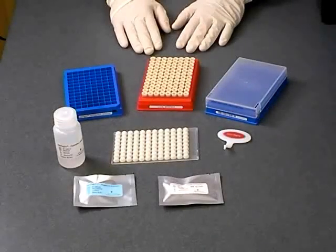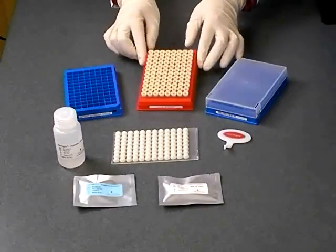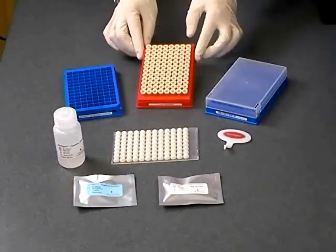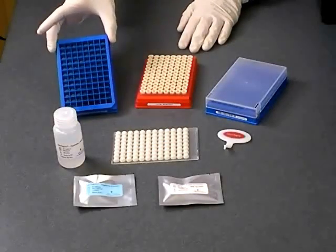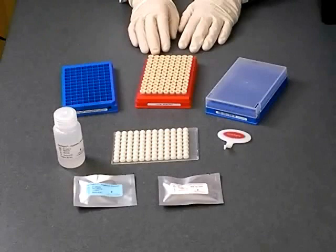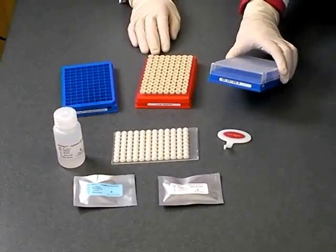Gentegra DNA tubes are available in a variety of packages, but GenVault recommends beginning with a kit format instead of individual racks. A starter kit includes a rack of 96 Gentegra DNA tubes, a 96-position working rack, and a 96-position storage rack with barcode.